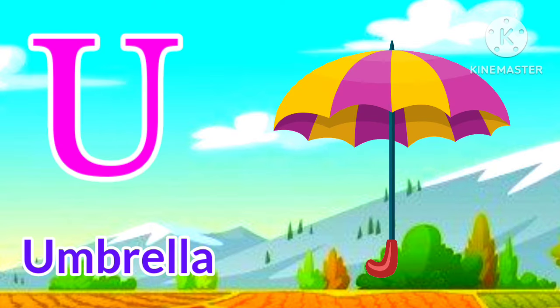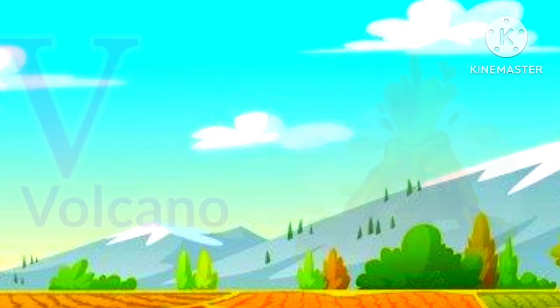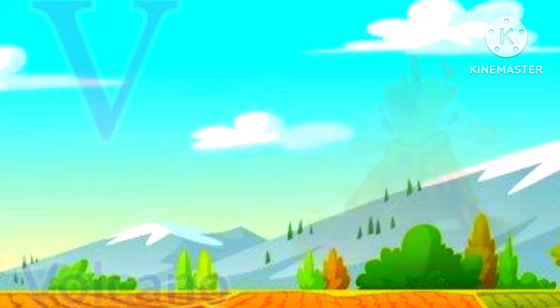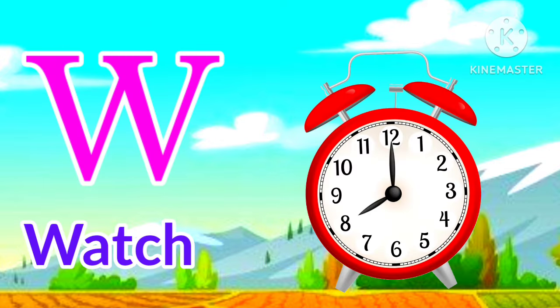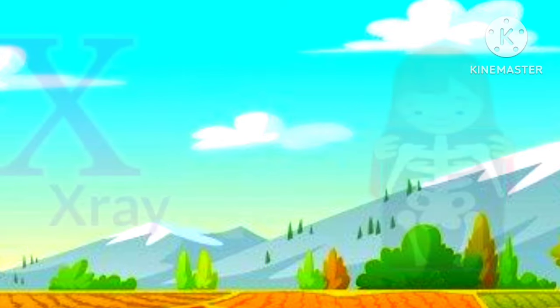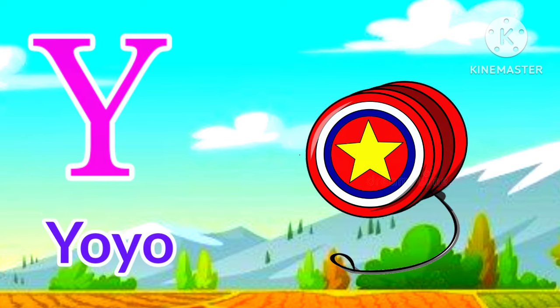U for umbrella, umbrella means chaata. V for volcano, volcano means jolamukhi. W for watch, watch means ghari. X for x-ray, x-ray means x-ray.